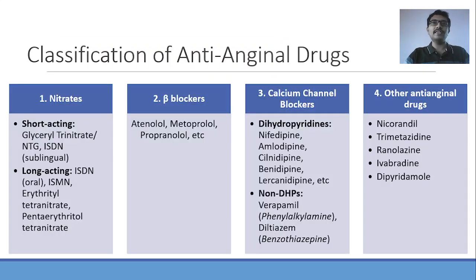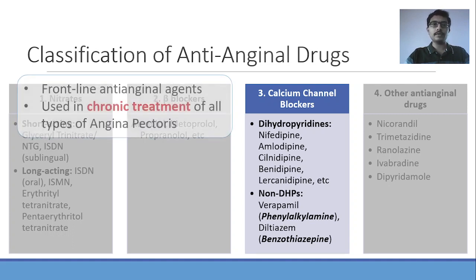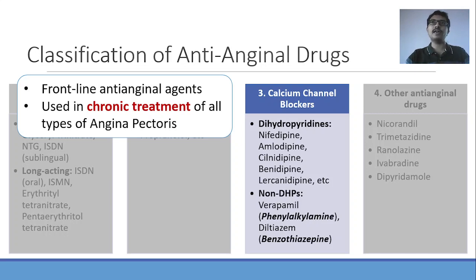Let us explore calcium channel blockers under the same headings. Before that, we need to classify anti-anginal drugs. There are four major groups: nitrates (long-acting and short-acting), beta blockers, calcium channel blockers, and other anti-anginal drugs. Calcium channel blockers are front-line anti-anginal drugs used in the chronic treatment of all types of angina pectoris. Nitrates are used for acute treatment, whereas beta blockers are not used in vasospastic angina.